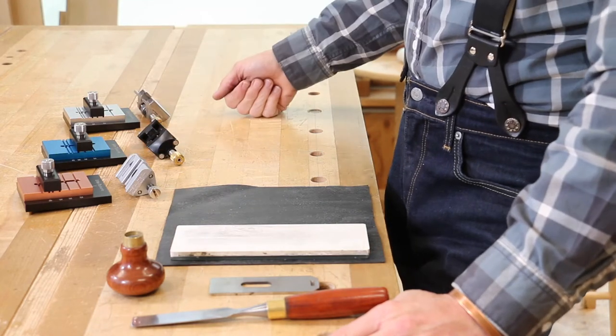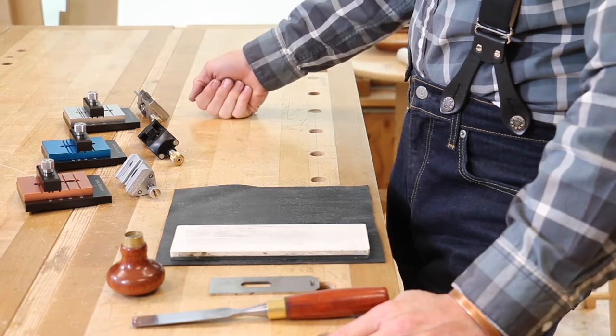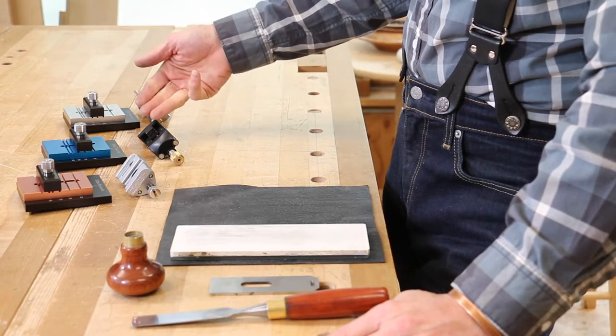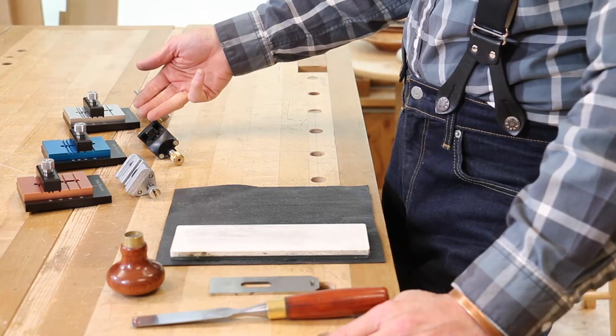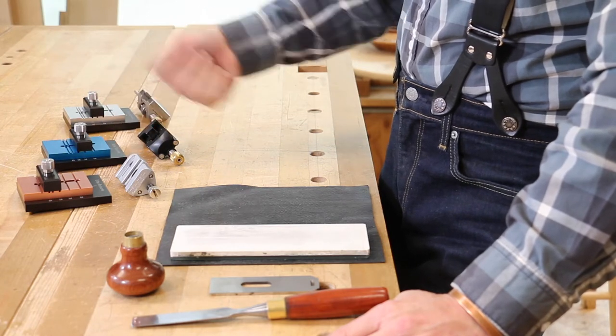Angle setting jigs from Urban Toolworks, one for Lee Nielsen's honing guide, one for the Veritas side clamping honing guide, and one for the Eclipse style side clamping honing guide.